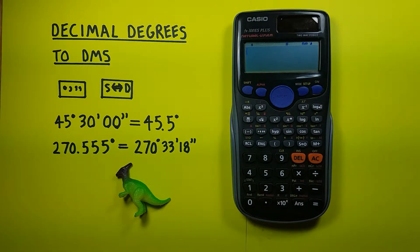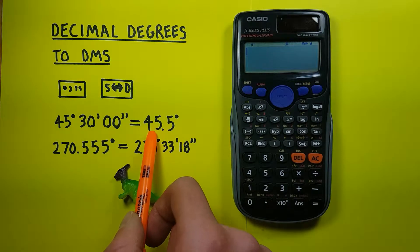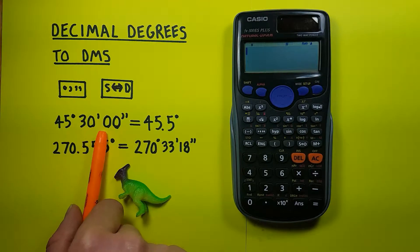To get started, if we just wanted to convert degrees, minutes, seconds to decimal degrees for say a trigonometric equation, like for example 45 degrees, 30 minutes, 0 seconds...